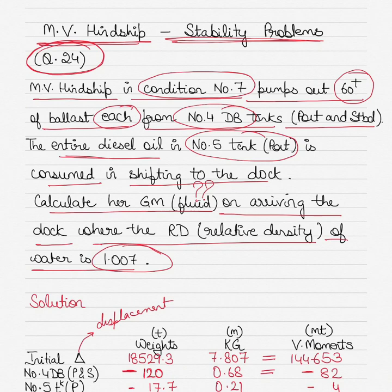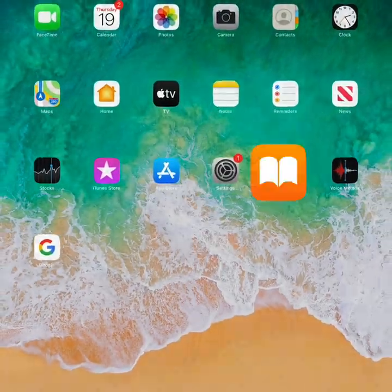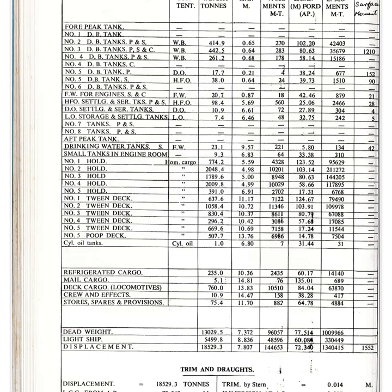The values in the hydrostatic particulars are for the relative density of sea water, which is 1.025, so you have to make certain corrections to adjust for the dock water relative density of 1.007. To get started, I go into the hydrostatic particulars which form part of the MV Hintship publication, and I go into condition number 7. If you haven't accessed it, pause the video — it's page number 50.